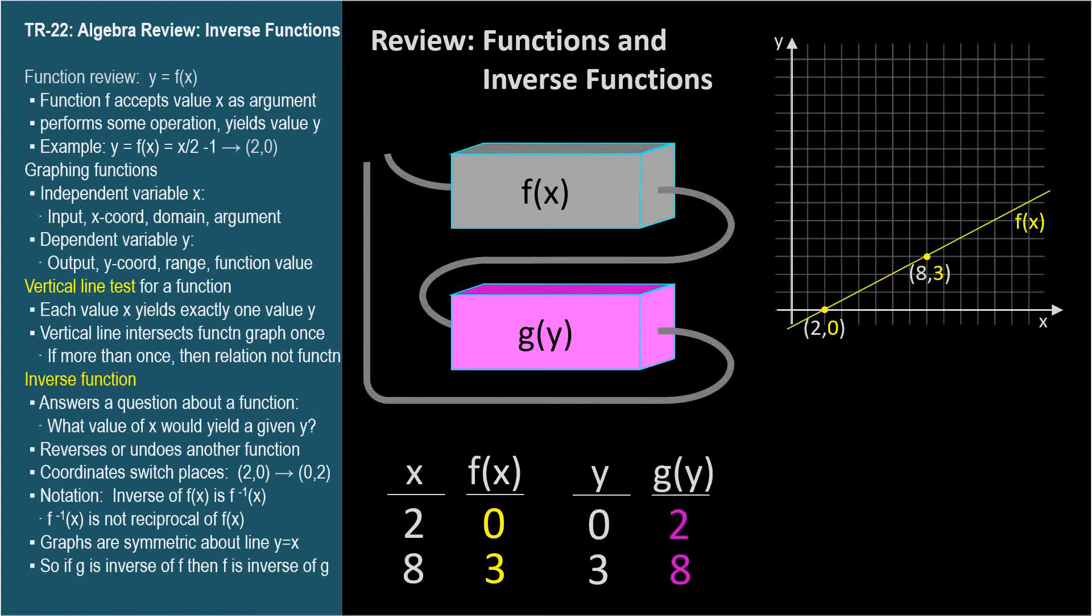So, corresponding to yellow point (2,0), we instead have pink point (0,2), and instead of (8,3), we have (3,8). This is true for every point in the function's domain, and the range of each function is its inverse's domain.